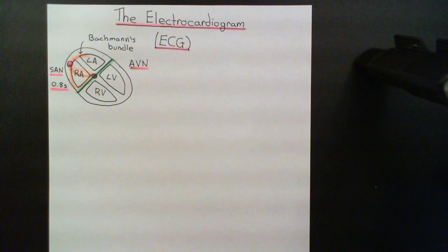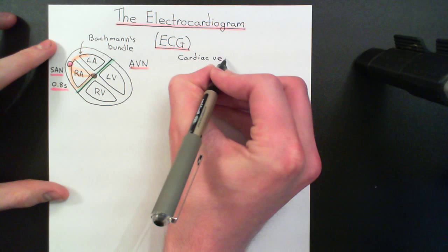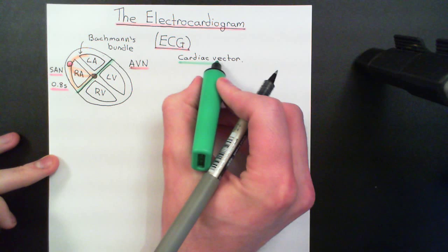To summarise: the sinoatrial node generates action potentials every 0.8 seconds. These go through Bachmann's bundle to the left atrium, where the signal is released onto left atrial cardiomyocytes and spreads from cardiomyocyte to cardiomyocyte causing them all to contract. The conduction pathways on the right side also take the signal to the AV node, and the signal is also released onto normal atrial cardiomyocytes propagating down the atria. The new concept I want to talk about is the cardiac vector, which is so important for understanding why the electrocardiogram looks the way it does.